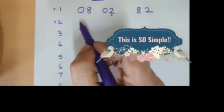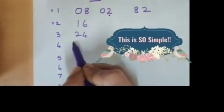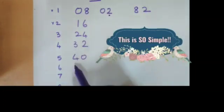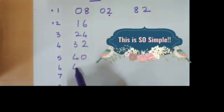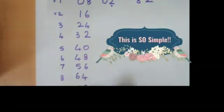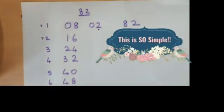So let's go to the 8 times table. 8 1's are 8, 8 2's are 16, 8 3's are 24, 8 4's are 32, 8 5's are 40, 8 6's are 48, 8 7's are 56, 8 8's are 64, 8 9's are 72, and 8 10's are 80. You've completed the 8 times table.